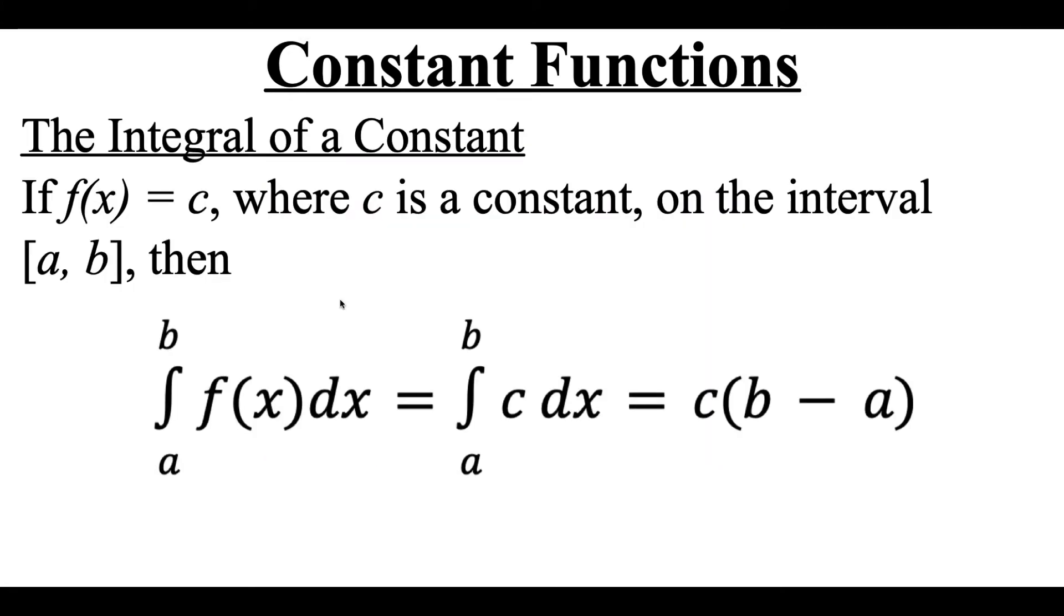So as we're looking at finding the integral of a constant function, if we've got f of x equals some number c, where c is just a constant value on the interval from a to b, then as we're finding its integral, all we need to do is take that c value times the difference between your upper limit b and your lower limit a. We'll talk about why that's the case as we take a look at our example.